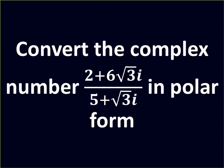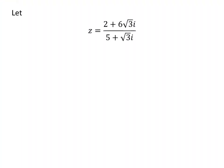In this video, we will learn to convert the complex number 2 plus 6 times square root of 3 times iota upon 5 plus square root of 3 times iota in the polar form. Here, iota is the imaginary unit. Let us assume Z be equal to 2 plus 6 times square root of 3 times iota upon 5 plus square root of 3 times iota.